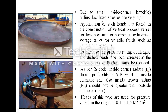Due to the small inside corner — that is, the knuckle radius — localized stresses are very high, so such heads are found in the construction of vertical process vessels for low pressure or horizontal cylindrical storage tanks for volatile fluids such as naphtha and gasoline. To increase the pressure rating, the localized stresses at the inside corner must be reduced. As per IS code, the inside corner radius (knuckle radius RK) should preferably be 10% of the inside diameter of the vessel, and the inside crown radius should not be greater than the outside diameter (DO) of the vessel. These heads are used for pressure intensities in the range of 0.1 to 1.5 MN/m².